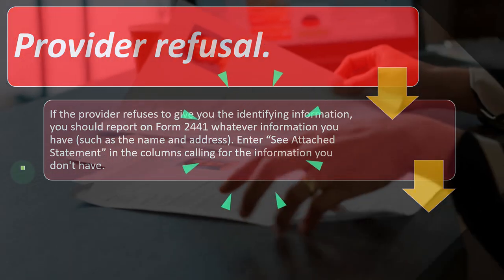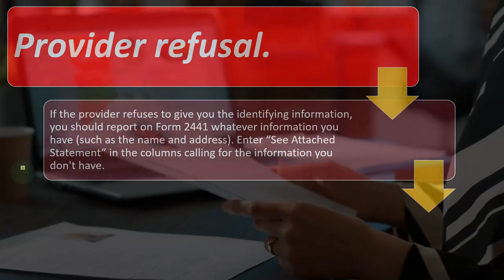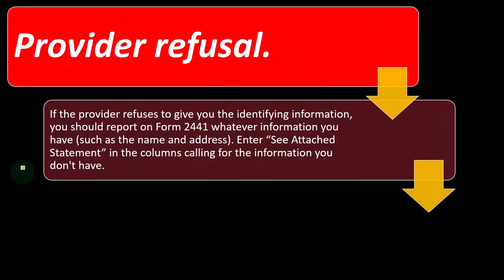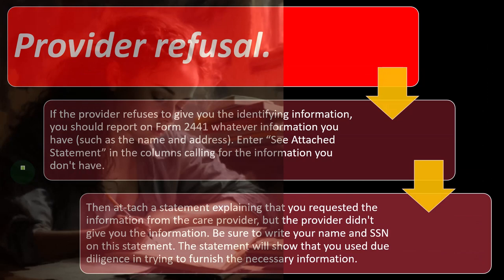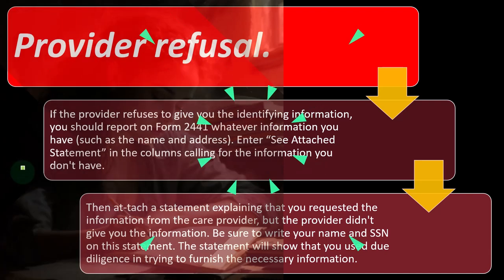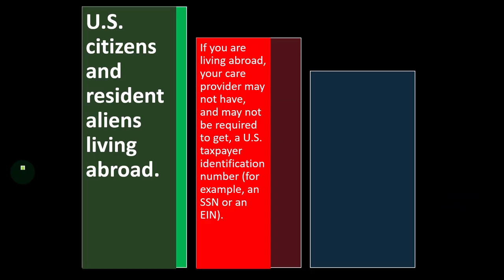Provider refusal: if the provider refuses to give you the identification information, you should report on Form 2441 whatever information you have, such as the name and address, and enter 'see attached statement' in the columns where you don't have the information. Then attach a statement explaining that you requested the information from the care provider but the provider didn't provide it. Be sure to write your name and Social Security number on this statement. The statement will show that you used due diligence in trying to furnish the necessary information.